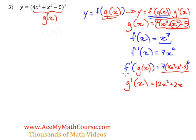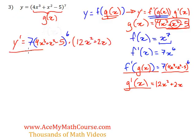Great. So we have f'(g) and we can multiply by g' to get the answer. So y' will be 7(4x³ + x² - 5)⁶ times g', which is 12x² + 2x. And that's it, the chain rule is complete.